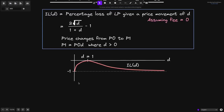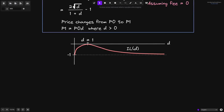The graph will look something like this. If the price does not change at all, then D is equal to 1 and there is no loss in providing liquidity to a constant product AMM. However, if the price changes either down or up, then the LP will experience some loss. For example, if the price of ETH goes to 0, then your loss will be minus 1, or 100%. And even if the price of ETH goes up, you'll still lose money providing liquidity to a constant product AMM.